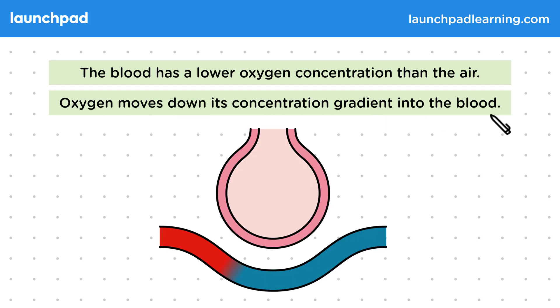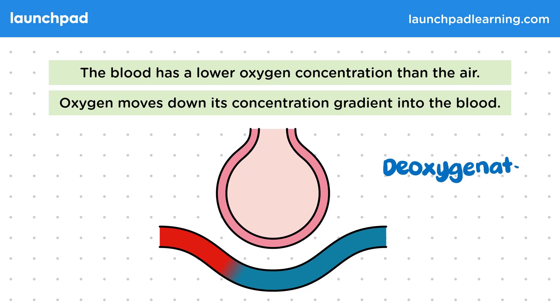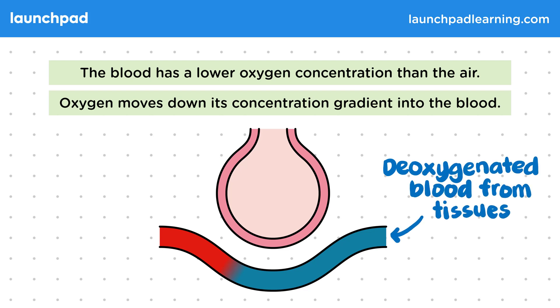For this example, let's imagine that the blood is flowing this way through the blood vessel in the lungs. This blue blood on this side indicates deoxygenated blood that's coming from the tissues. This is low in oxygen.